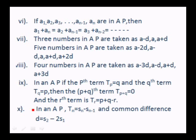When taking three numbers in an AP, take them as a−d, a, a+d so that when the sum is given, d cancels. For five numbers, take a−2d, a−d, a, a+d, a+2d. For four numbers, use common difference 2d: take a−3d, a−d, a+d, a+3d, so the sum becomes 4a.